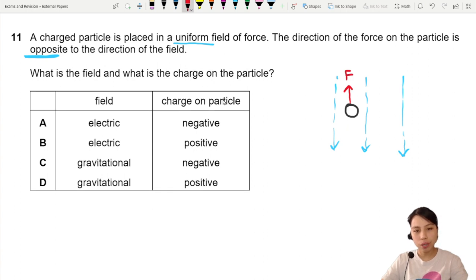What is the field and what's the charge on the particle? For a charged particle, it's not going to be gravitational field. If you have a charge, it's not going to be gravitational because gravitational field does not care about charge, they only care about mass.